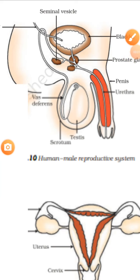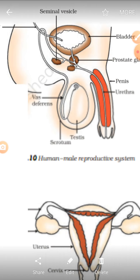Hello students, welcome back to your biology class. Till period 2, we have finished reproduction — both asexual and sexual reproduction in plants. Now we'll be discussing sexual reproduction in animals. As per the syllabus, you have the reproductive system in human beings.